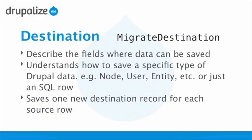Destinations are also plugins built by implementing the MigrateDestination class. The migrate module provides a handful of these already, which we'll make use of. Since our destination is Drupal, one of these migrate destinations is responsible for understanding the underlying aspects of Drupal - it needs to know that you're trying to save a node or a user and what that entails. For example, when saving a user in Drupal it calls the user_save function and ensures all hooks trigger. The destination plugin is responsible for saving one new record of data for each source row.